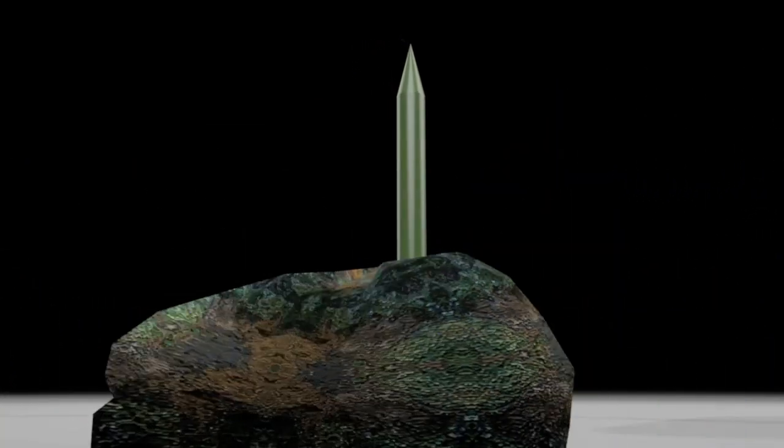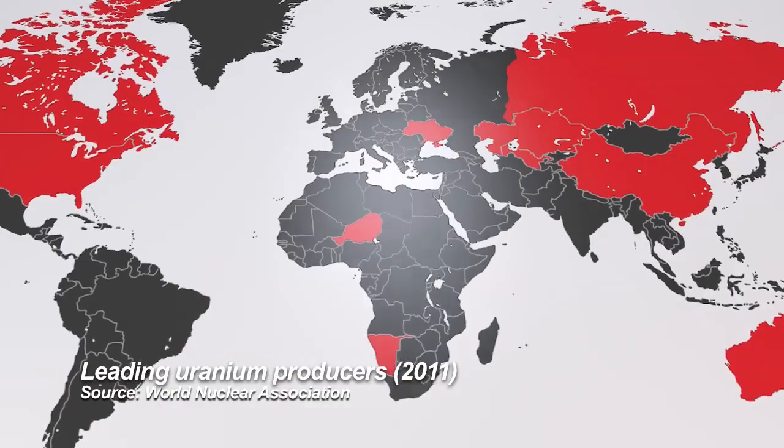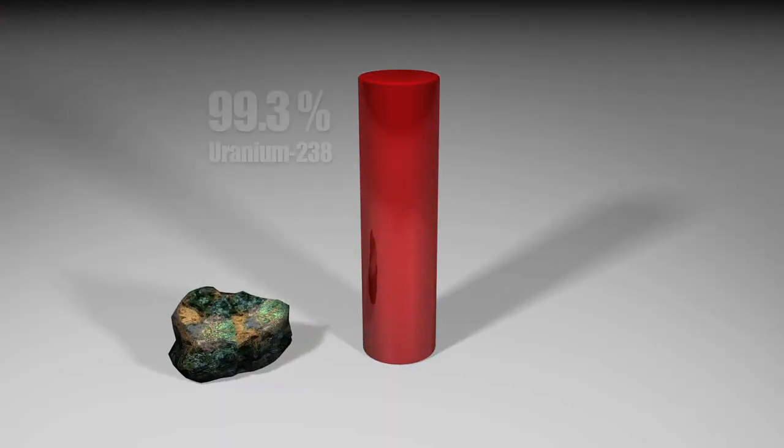Uranium is one option. Commercially available, it also occurs naturally. However, it's made up of two isotopes. 99.3% is uranium-238 and 0.7% is uranium-235.